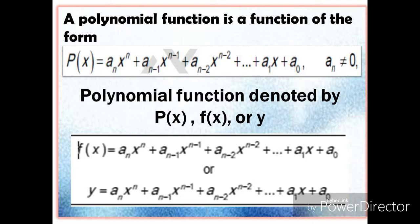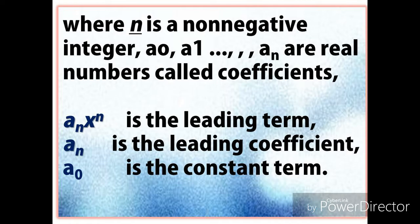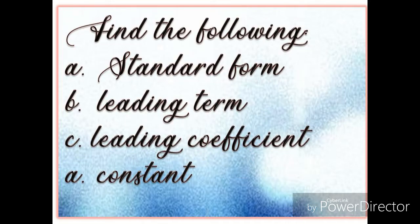Polynomial functions are denoted by P of X, F of X, or Y. In the equation, n is a non-negative integer, and a sub 0, a sub 1 through a sub n are real numbers called coefficients. The term a sub n times X raised to n is called the leading term, a sub n is the leading coefficient, and a sub 0 is the constant.